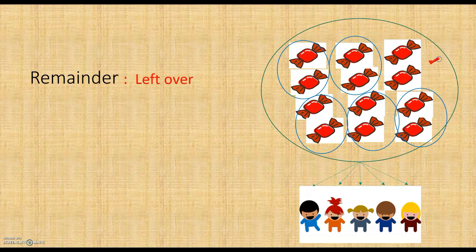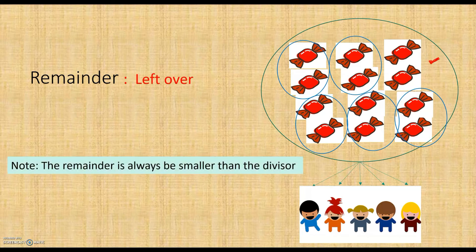So the leftover chocolates are called the remainder. Here the remainder is 2. The most important thing to remember is that the remainder is always smaller than the divisor. Here the remainder is 2 and the divisor is 5, so 2 is less than 5 — meaning the remainder is less than the divisor. So our remainder is correct.